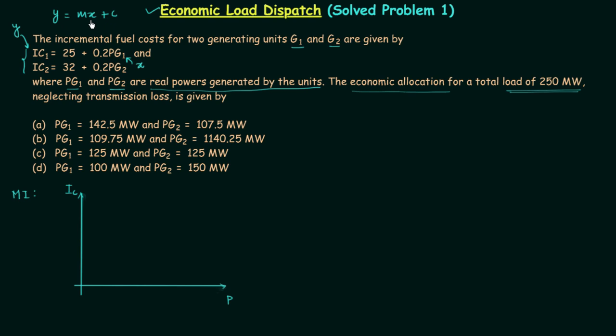So Y is IC1, X is PG1, so M which is the slope is equal to 0.2 and 25 is the intercept. So 25 is the intercept, let's say this point here is 25, and we have to take the slope equal to 0.2. Let's take a random slope and assume that it is equal to 0.2.